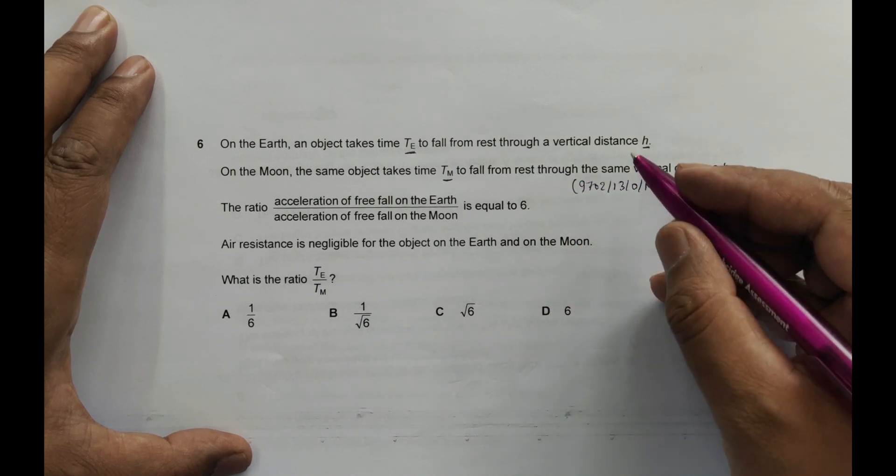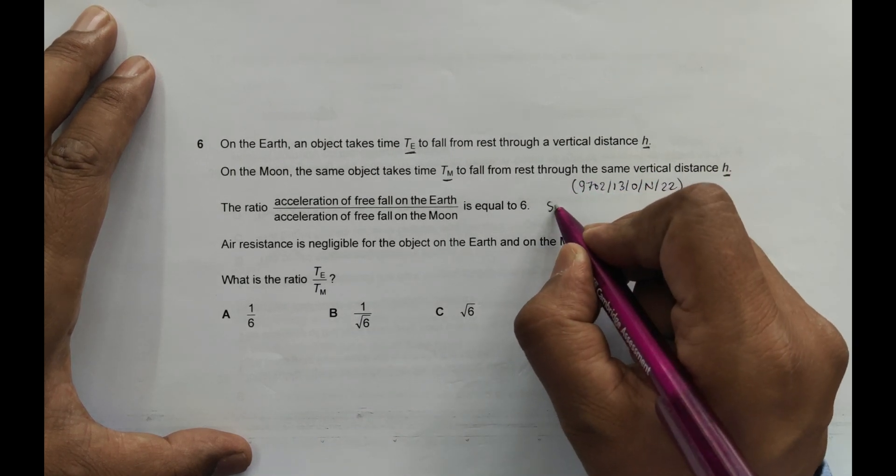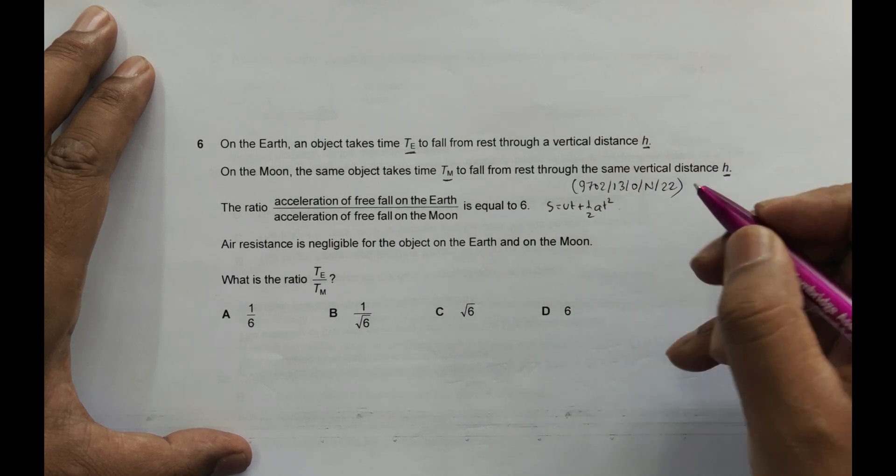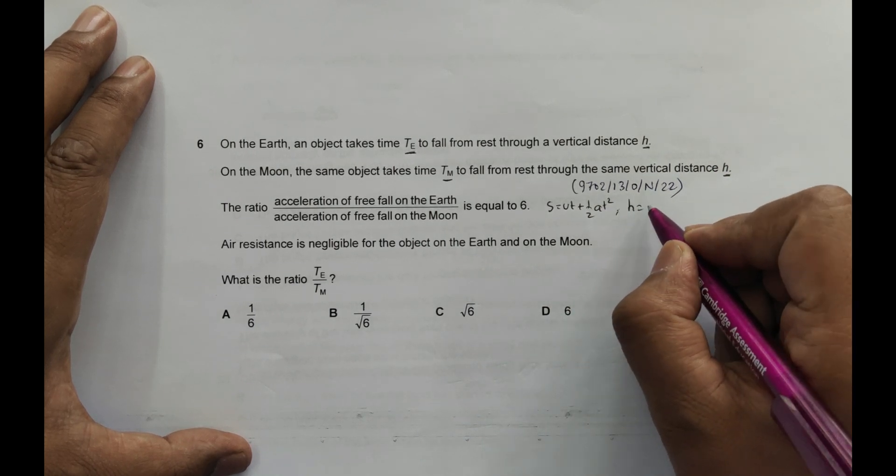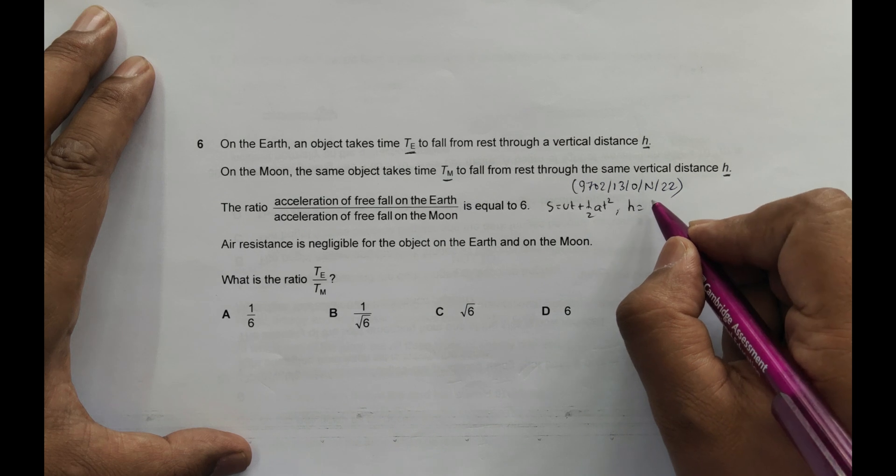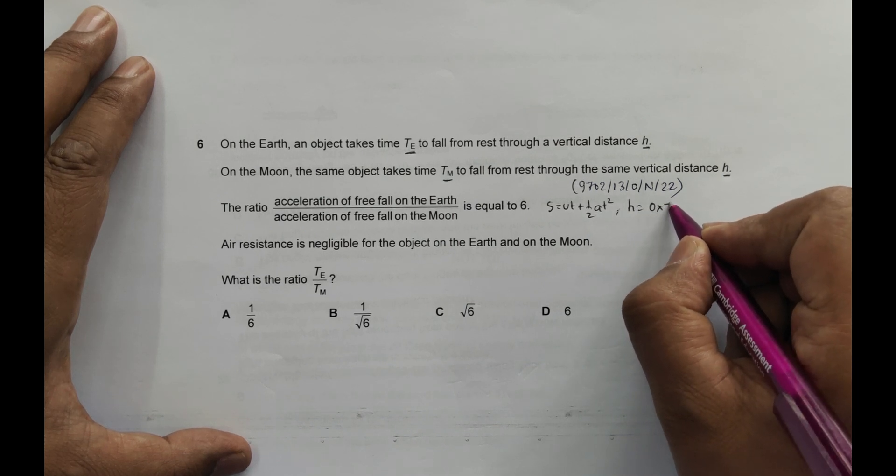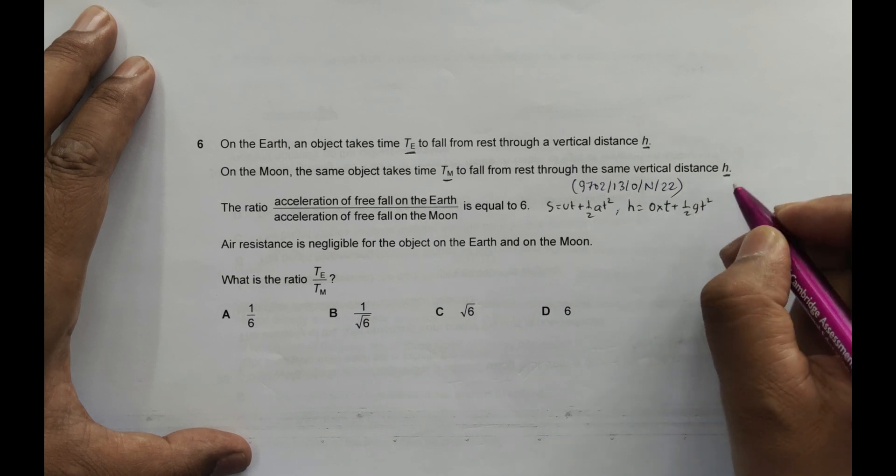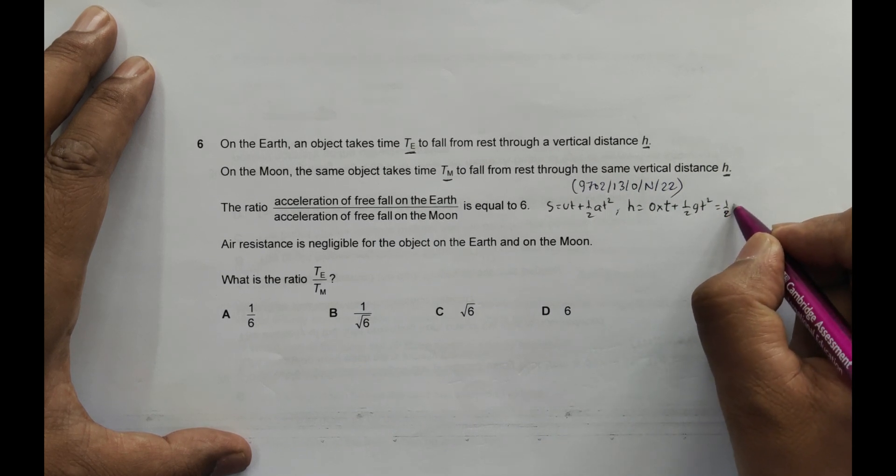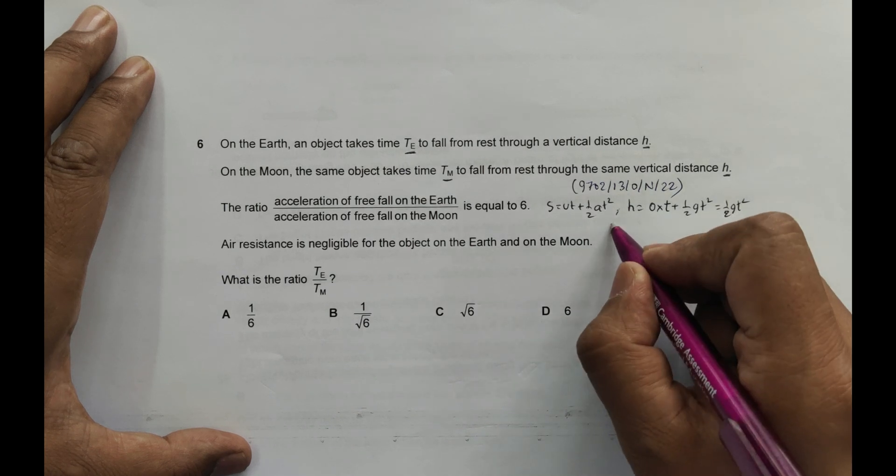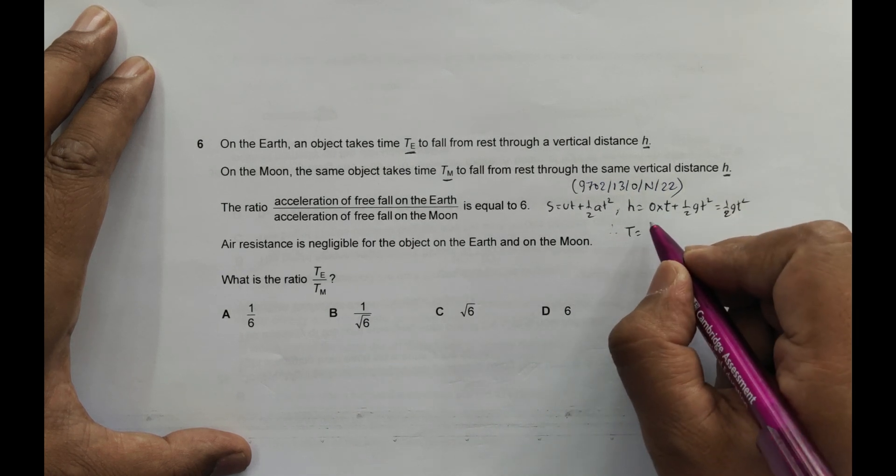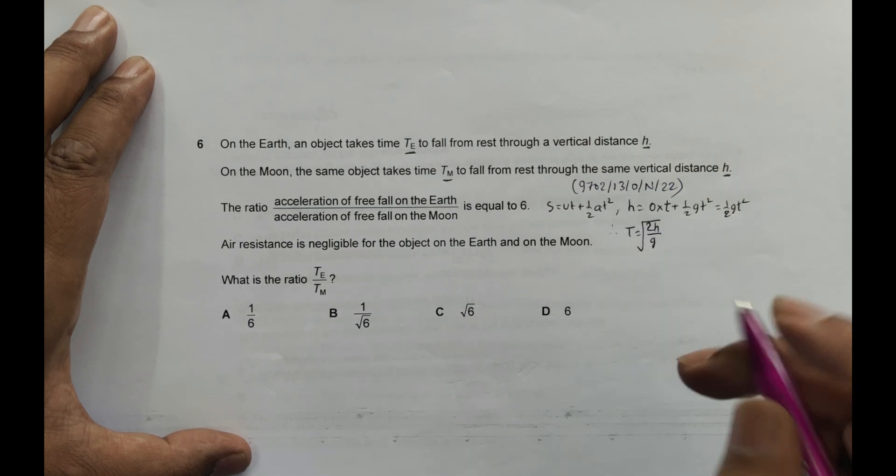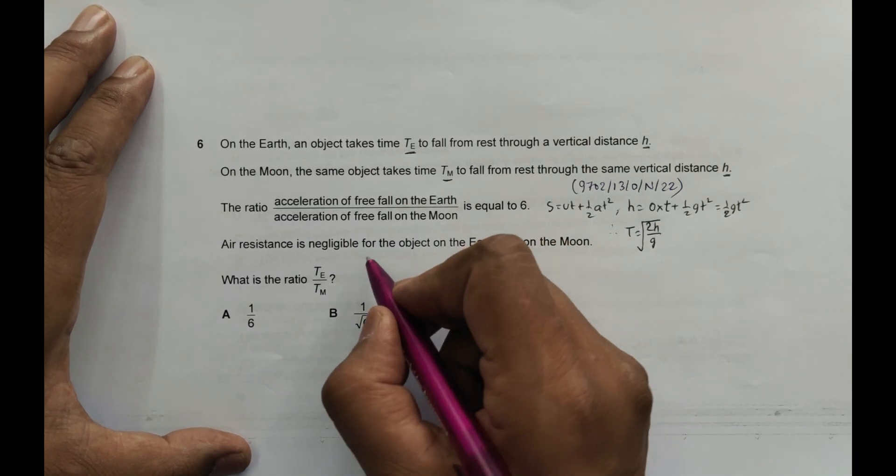In this case, if something falls like this, we should have s equals ut plus 1/2 gt squared. Here it has been falling from rest, so that's zero times T plus 1/2 g T squared equals half g T squared. Therefore, the time T is equal to the square root of 2h by g.